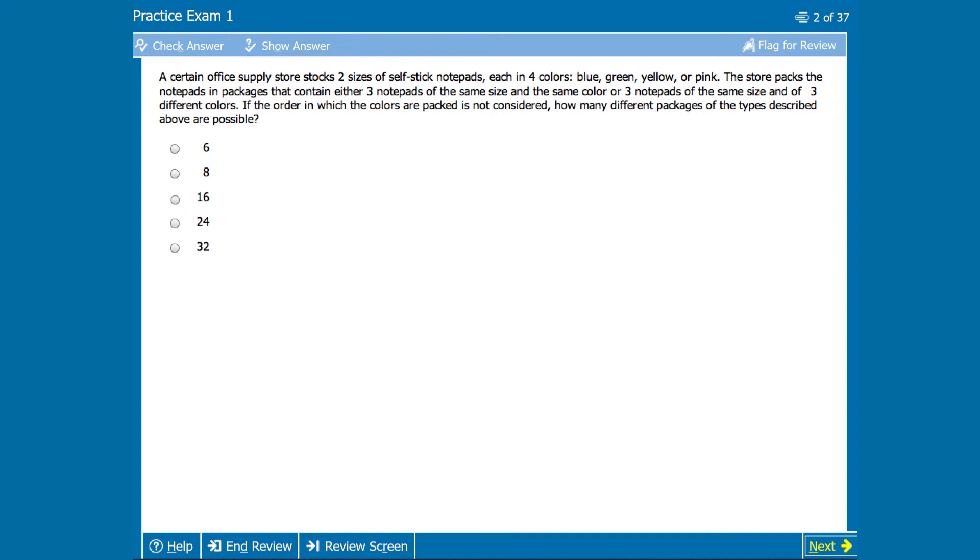If you want to give this combinatorics problem a read on your own, feel free to pause the video because we're going to jump right in. This question asks us how many notepad packages we can make. It gives us two types of packages that we can make. A package with three notepads of the same size and the same color, or three notepads of the same size and three different colors. Now the question tells us that order isn't considered, so we know we've got a combination here. But before we go nuts and start plugging random numbers into the combination formula, let's try to break this thing down.